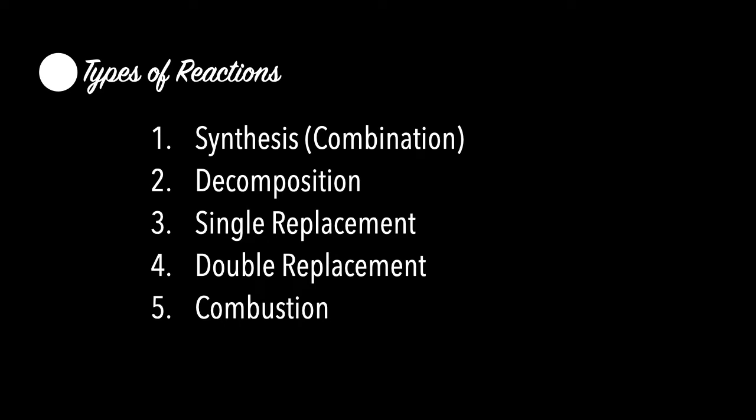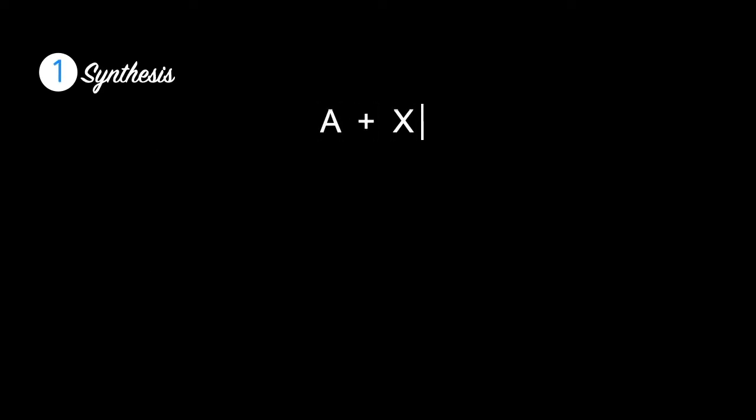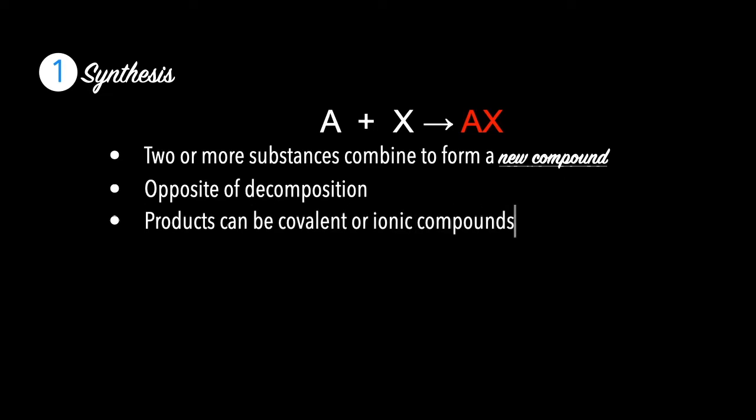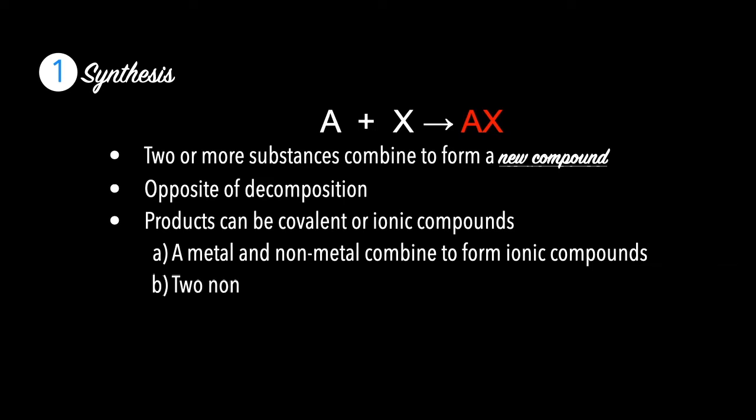The first type of reaction is called synthesis. Synthesis has the following format: A plus X gives you AX. Two or more substances combine to form a new compound. Think of synthesis as the opposite of decomposition. Products can be covalent or ionic compounds. For example, a metal and non-metal combine to form ionic compounds, whereas two non-metals combine to form covalent compounds.